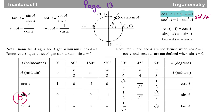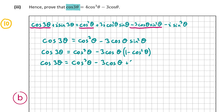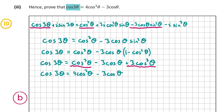Using the identity cos²θ + sin²θ = 1, we rearrange to sin²θ = 1 − cos²θ and substitute: cos 3θ = cos³θ − 3cosθ(1 − cos²θ). Expanding, cos 3θ = cos³θ − 3cosθ + 3cos³θ. Combining like terms, cos³θ + 3cos³θ = 4cos³θ, giving us cos 3θ = 4cos³θ − 3cosθ. Therefore we've proven that cos 3θ = 4cos³θ − 3cosθ, and that's the answer for part b3 and the end of the video. Thank you very much for watching.